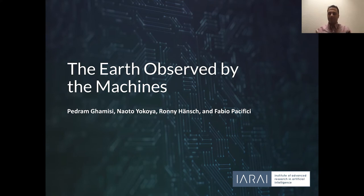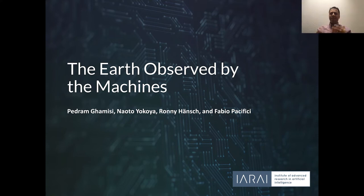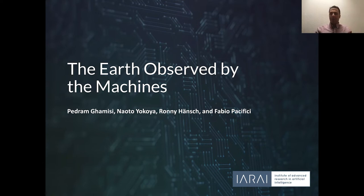In this chat, we will give a short introduction to remote sensing and some of its challenges where a tight synergy between RS and AI can offer solutions. We will discuss differences between close-range computer vision and earth observation tasks, and why many successful approaches in computer vision cannot be directly applied to remote sensing data. We will also discuss how a strong synergy between industry, academia, and government agencies can better serve the broader remote sensing and AI community.